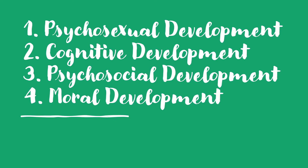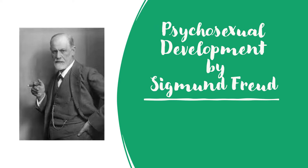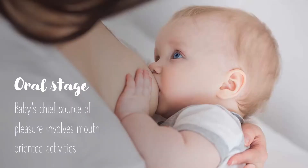First we look at psychosexual development by Sigmund Freud. I have spoken about this theory earlier — you can watch my personality video where I covered these stages in detail. Here we look at them briefly. There are five stages. The first is the oral stage: birth to 12 to 18 months. The baby's chief source of pleasure involves mouth-oriented activities such as sucking and feeding.